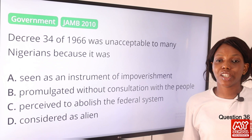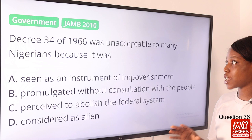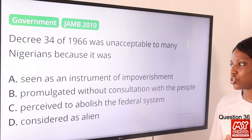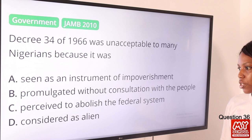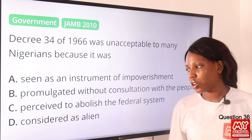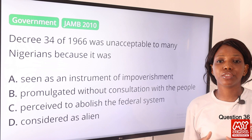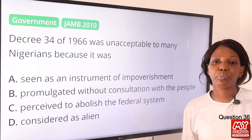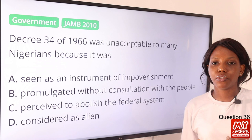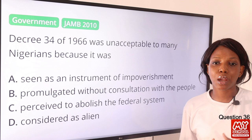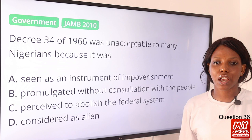Question 36. Decree 34 of 1966 was unacceptable to many Nigerians because it was: A, seen as an instrument of impoverishment; B, promulgated without consultation with the people; C, perceived to abolish the federal system; D, considered as alien. The answer is option C. Decree 34 of 1966 was promulgated by Aguiyi-Ironsi to discard the federal system and replace it with a unitary system of government, intending to discourage tribalism and tribalistic loyalties among the people.